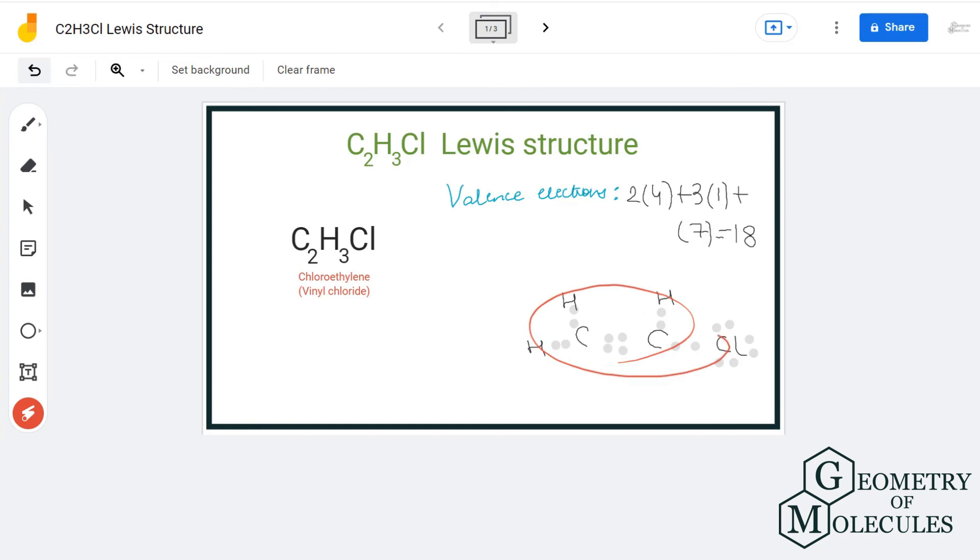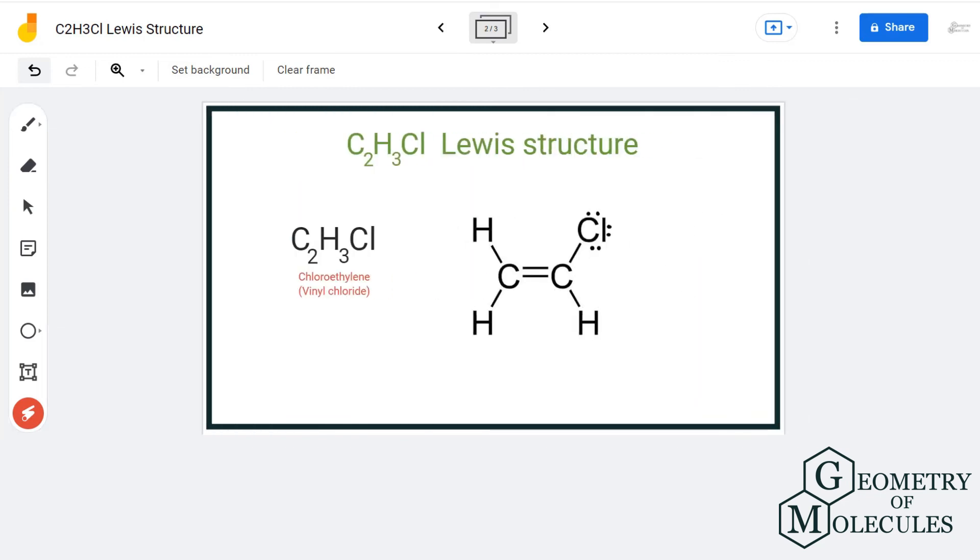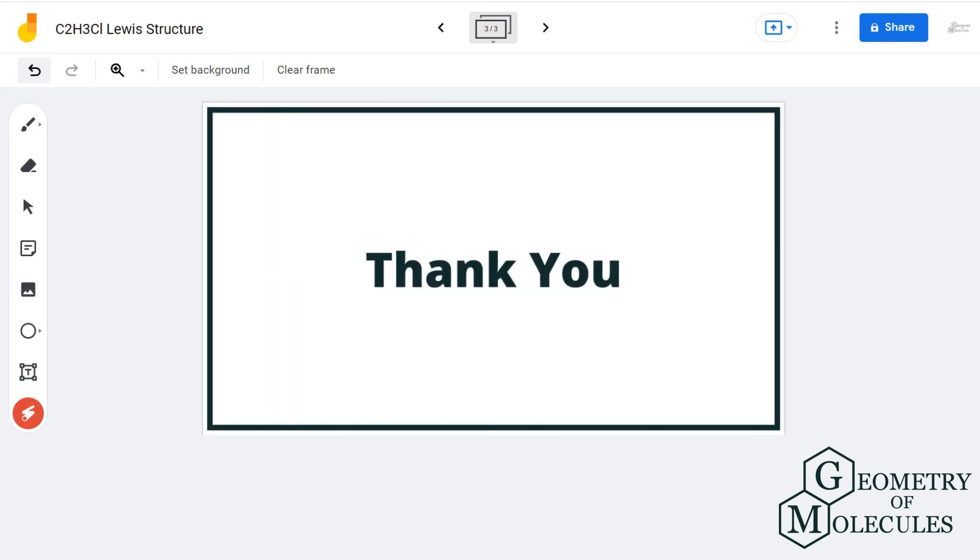And now this is the Lewis structure for C2H3Cl in which all the atoms have a complete outer shell. For more such videos on Lewis structure, molecular geometry, polarity of the molecules, make sure to subscribe to our channel and thanks for watching.